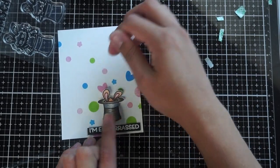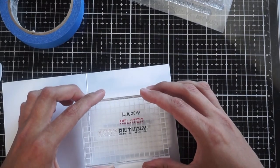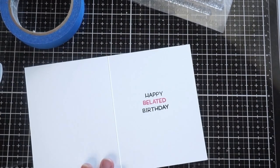And I will start working on my card base, which is going to be an A2 size base, which is four and a quarter by five and a half. And on the inside of the card, it's going to say happy belated birthday, which goes along with the I'm so embarrassed sentiment in the front.